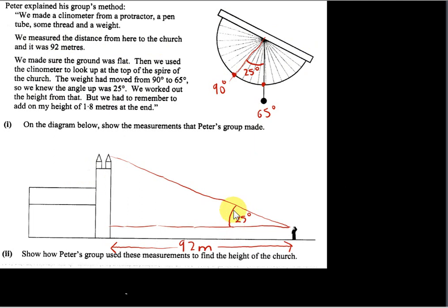So the angle of elevation here for a sighting to the top of this church is 25 degrees, the angle between the line of sight and the horizontal. We worked out the height from that, but we had to remember to add on my height of 1.8 meters at the end.